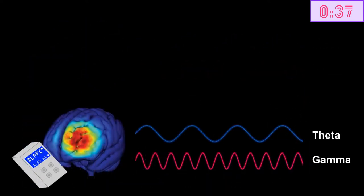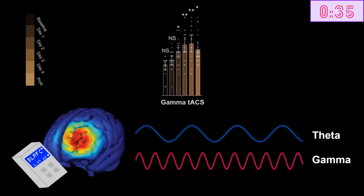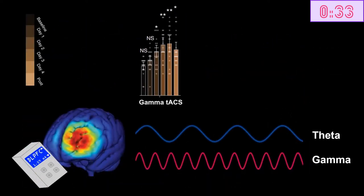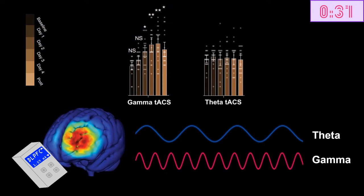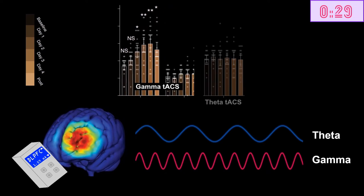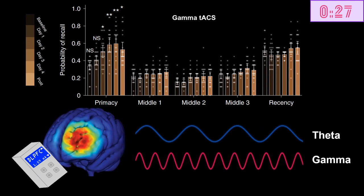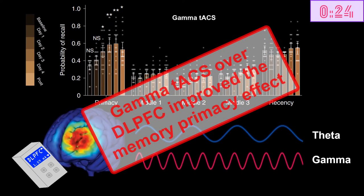In the dorsolateral prefrontal cortex, however, only stimulation of gamma brain waves increased memory. In this case, primarily the words early in the sequence. This shows that prefrontal gamma TACS increased the memory primacy effect.